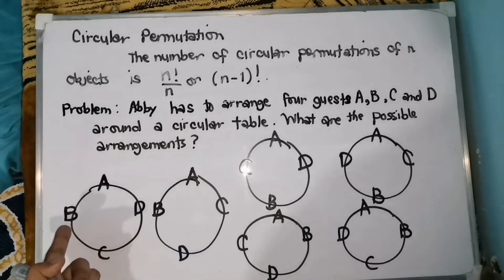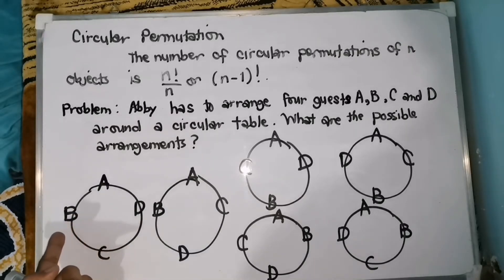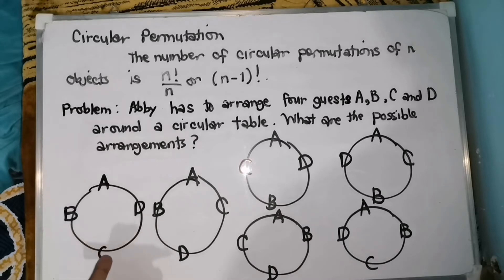So, pinagpalitin lang natin yung pwesto nitong tatlo — si guest B, C, and D. So, therefore, mayroon tayong six circular permutations for the guests.